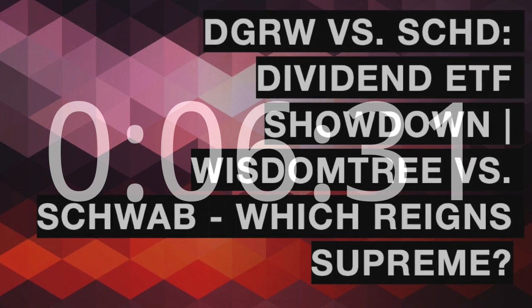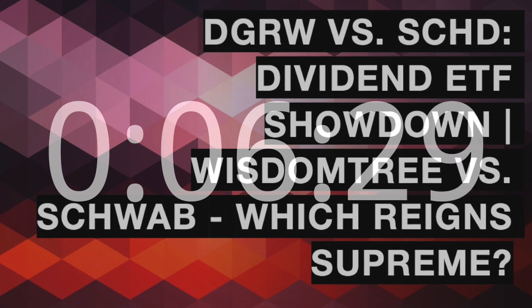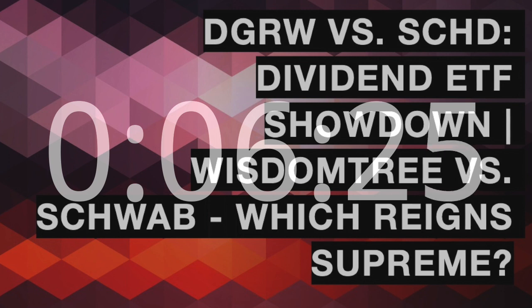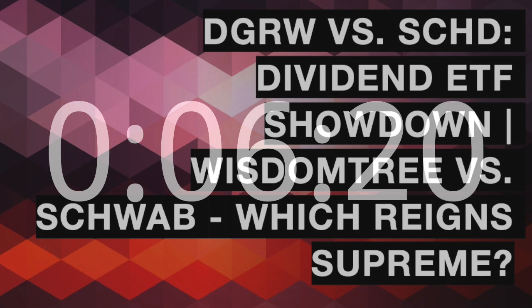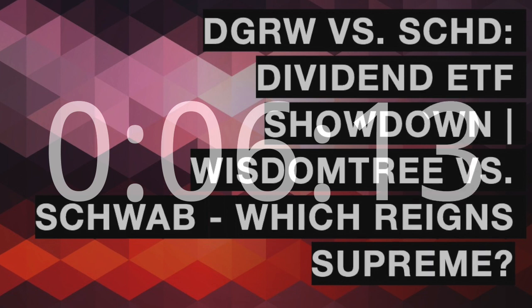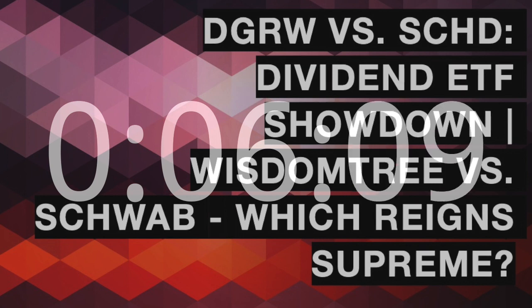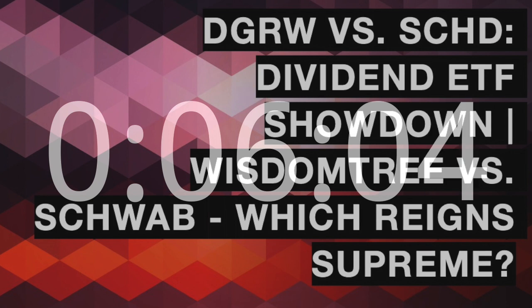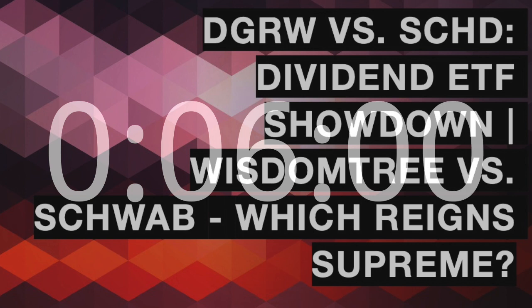SCHD — Schwab US Dividend Equity ETF — focuses on high-quality US dividend-paying stocks, but its methodology differs from DGRW. The fund tracks the Dow Jones US Dividend 100 Index, which includes 100 high-dividend-yielding US stocks. SCHD's selection process is based on a combination of cash flow to total debt, return on equity, and dividend yield. The fund prioritizes stocks with a consistent history of paying dividends.